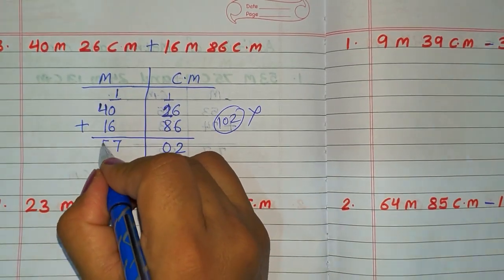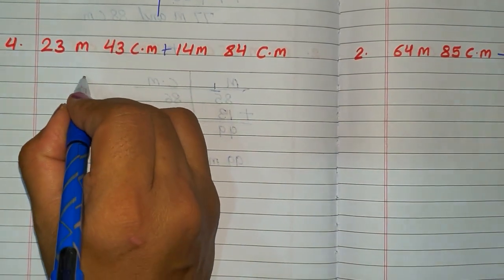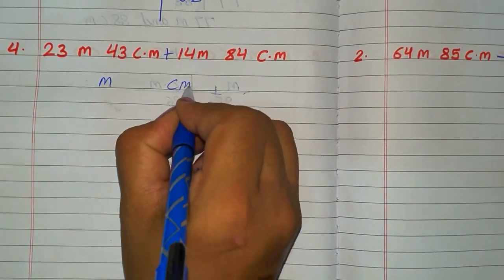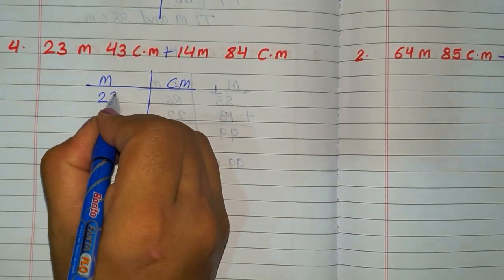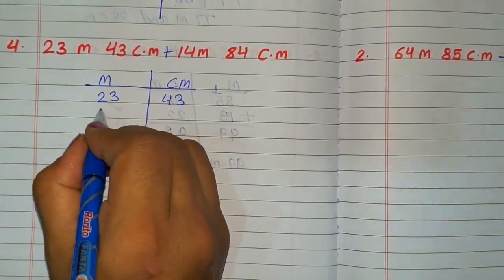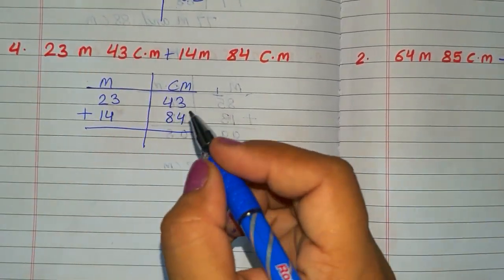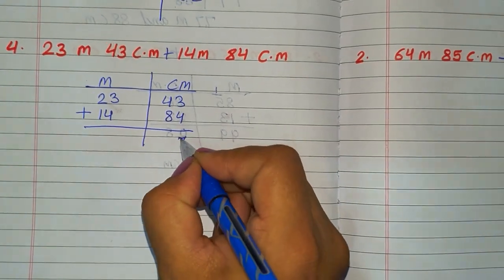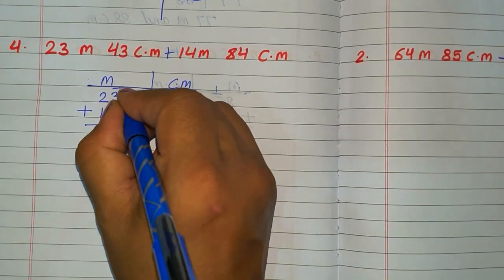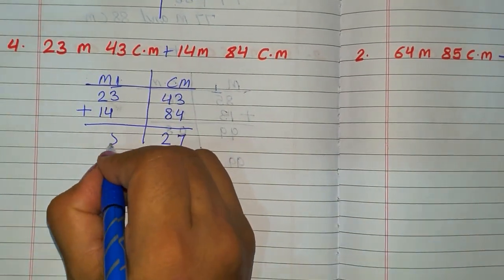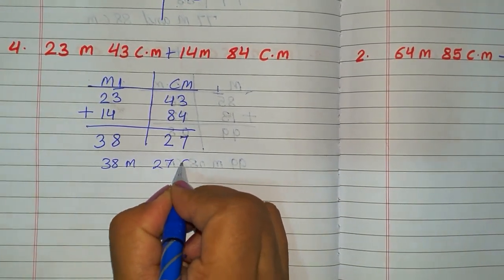Now come to the next question. We make the column again: 23 meter 43 centimeter, and 14 meter 84 centimeter. Then 4 plus 3 is 7, 8 plus 4 is 12 — write 2, carry 1. 3 plus 1 is 4, 4 plus 1 is 5, 2 plus 1 is 3. The answer is 38 meter 27 centimeter.